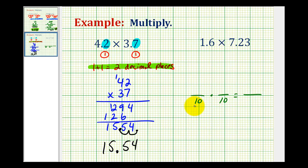And when we multiply tenths times tenths, we know that ten times ten is equal to a hundred, which means our product would have to contain hundredths as well.